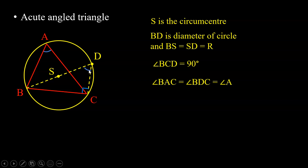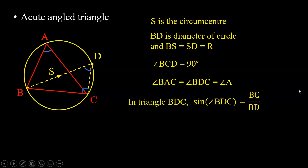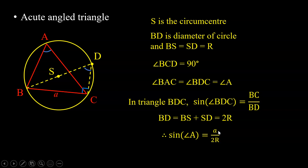In triangle BDC, sin(angle BDC) = opposite/hypotenuse. Therefore sin(angle BDC) = BC/BD. BC is side a, and BD is the diameter, that is, BS + SD = 2R. Since angle BDC equals angle A, we have sin A = a/2R. Rearranging, we get a/sin A = 2R.